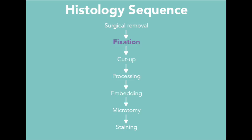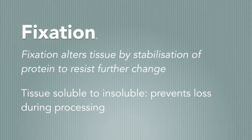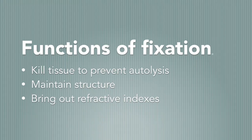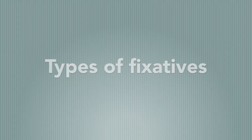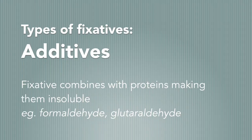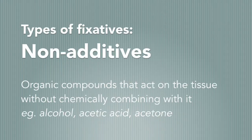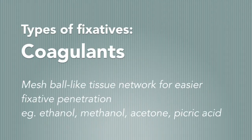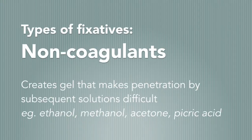Fixation alters tissue by stabilisation of protein to resist further change. Fixation works by converting tissue from soluble to insoluble, preventing loss during the processing stage. The main functions of fixatives are to kill tissue, preventing autolysis, to maintain structure, and to bring out refractive indexes to increase visibility and contrast. There are several types of fixatives, including additives, where the fixative combines with the tissue proteins making them insoluble; non-additives, organic compounds that act on the tissue without chemically combining with it; and coagulants, that create a mesh ball-like tissue network that allows solutions to more easily penetrate the section.